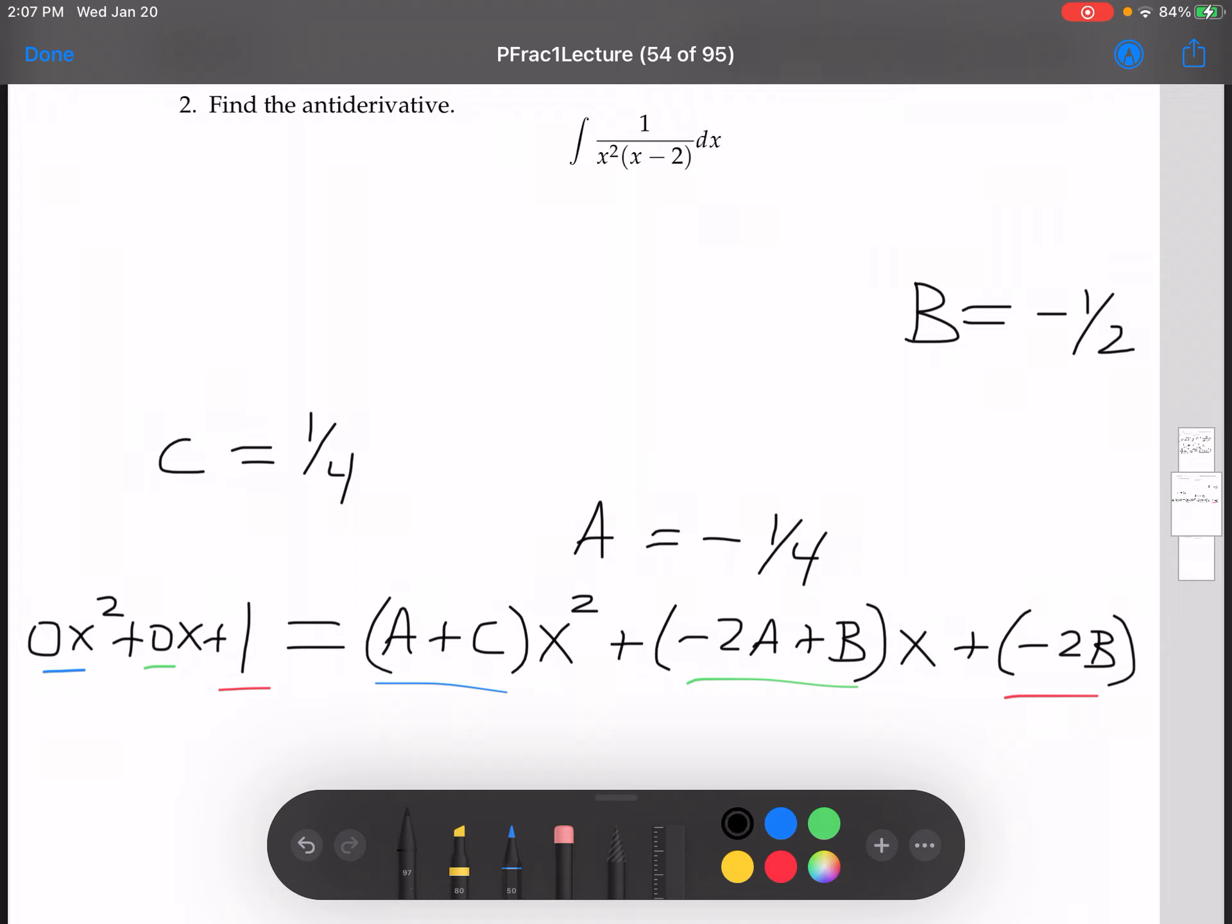And so now remember what we found, right? We started out with 1 over x squared times x minus 2 equals A over x plus B over x squared plus C over x minus 2. And so we found now that A is negative 1 fourth, B is negative 1 half, and C is 1 fourth.